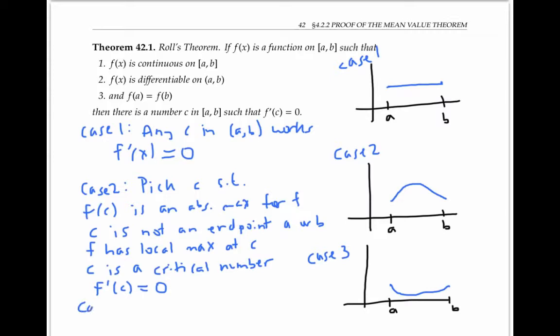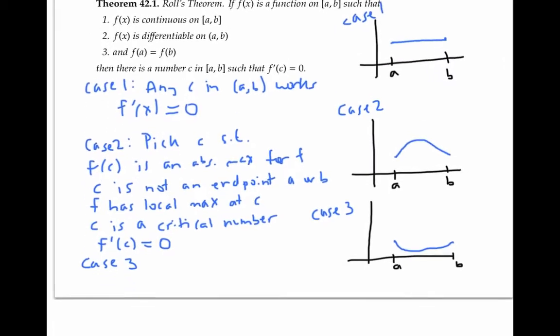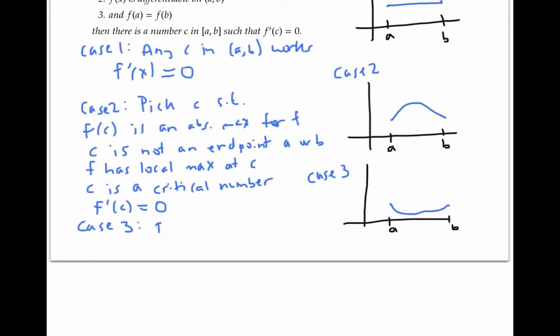Case three is very similar. We just need to pick a c such that f(c) is an absolute minimum value for f. The same argument then shows that c is a critical number in the interior, and so f'(c) has to be zero. And that concludes the proof of Rolle's theorem.